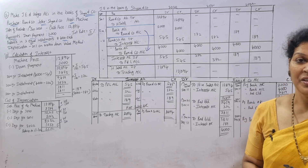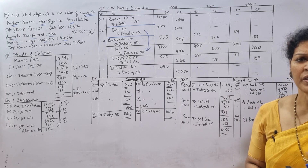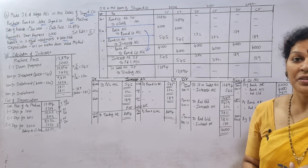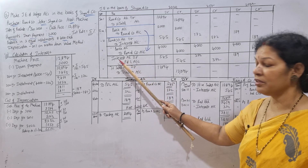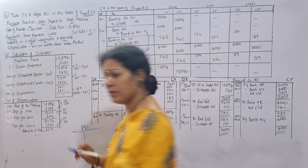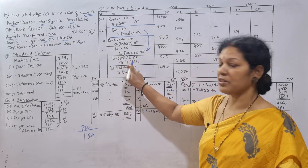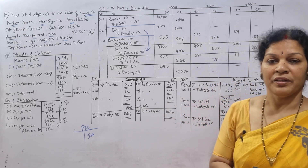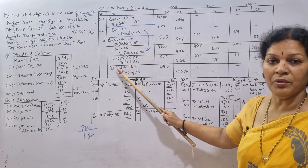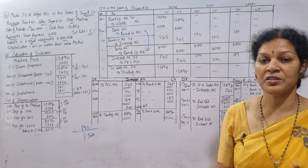Fifth entry: in the books of the vendor we do not provide depreciation — depreciation will not appear. However, interest must be transferred to the Profit and Loss account. Interest is on the credit side, meaning it is income, so it appears on the credit side of P&L. The entry is: Interest account debit to Profit and Loss account. Narration: being interest transferred to P&L account.